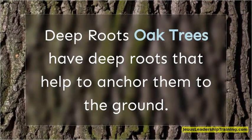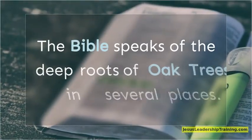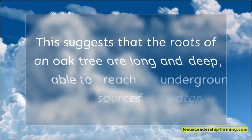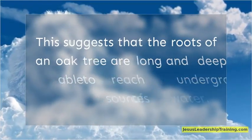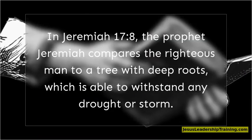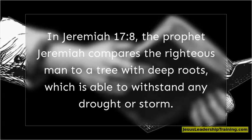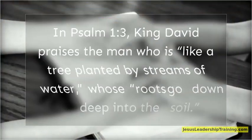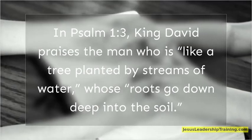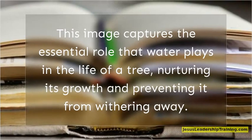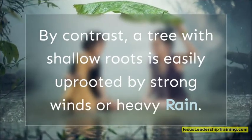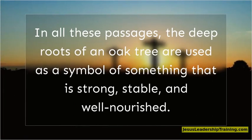Deep Roots: Oak trees have deep roots that help to anchor them to the ground. The Bible speaks of the deep roots of oak trees in several places. In Isaiah 6:13, the prophet Isaiah describes the roots of an oak tree as stretching out its roots to the water, suggesting that the roots are long and deep, able to reach underground sources of water. In Jeremiah 17:8, the prophet Jeremiah compares the righteous man to a tree with deep roots, which is able to withstand any drought or storm. In Psalm 1:3, King David praises the man who is like a tree planted by streams of water, whose roots go down deep into the soil. In all these passages, the deep roots of an oak tree are used as a symbol of something that is strong, stable, and well-nourished.